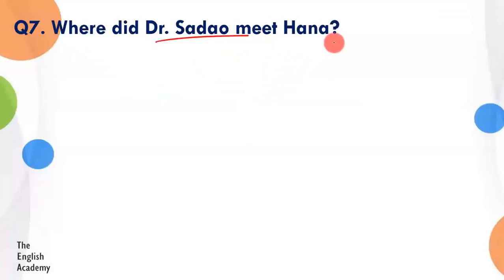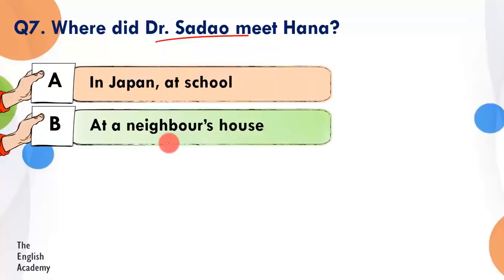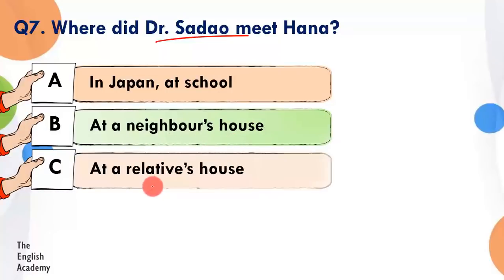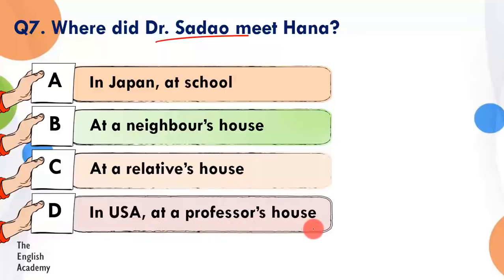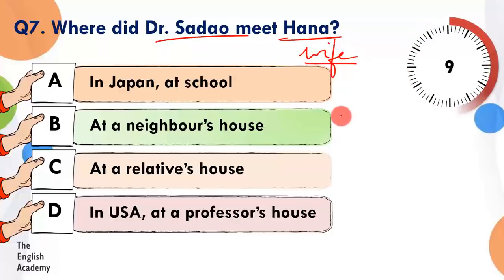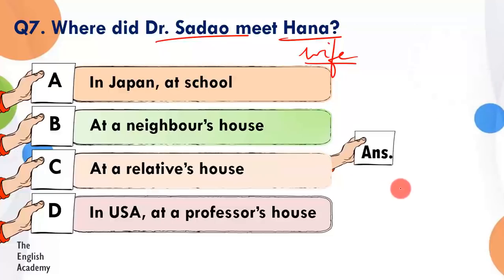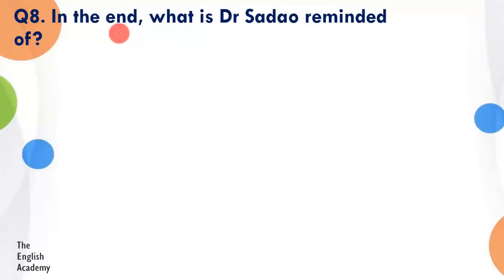Question 7: Where did Dr. Sadao meet Hana? Option A: in Japan at school. Option B: at the neighbours' house. Option C: at a relative's house. Option D: in USA at a professor's house. The time has started. Hana was his wife. Time is up — the answer is Option D. Wo dono America mein mile the, ek professor ke ghar par, dono America padhne ke liye gaye hue the.